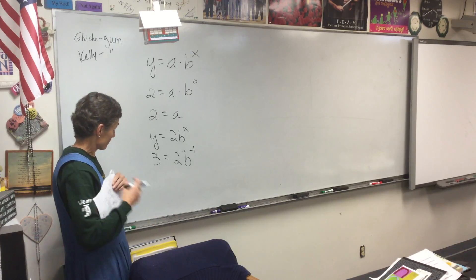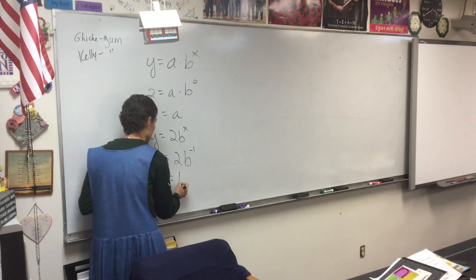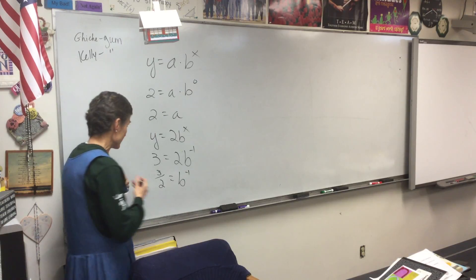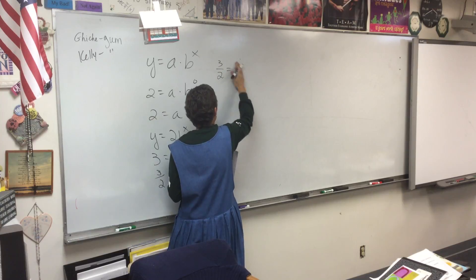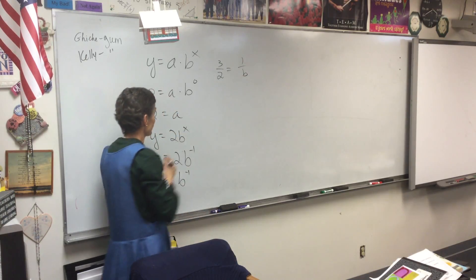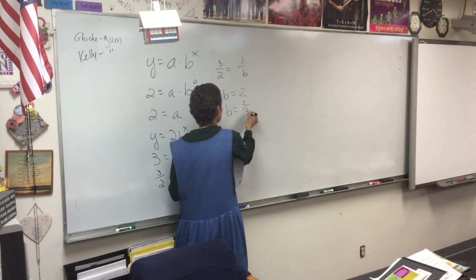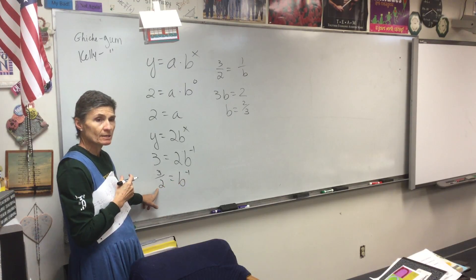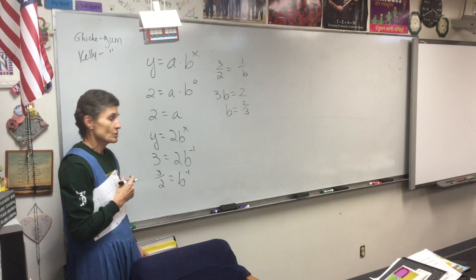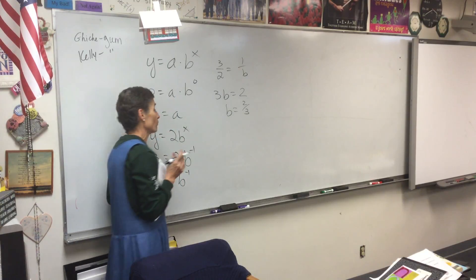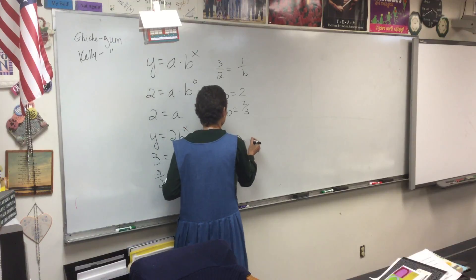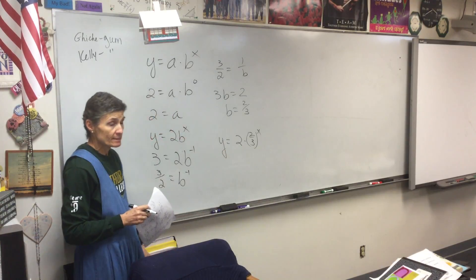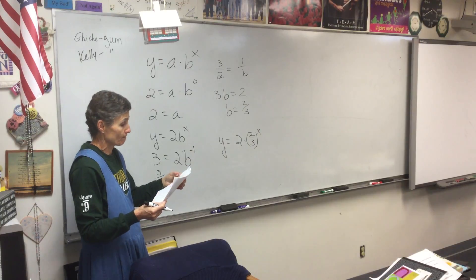Divide by 2. It's one over B. Then you cross multiply. So then we cross multiply, and it turns out B is two-thirds. Does it make sense that if B to the negative first is three-halves, regular B would be two-thirds? Don't forget to write your answer. Y equals 2 times two-thirds to the X. Do not ever combine these two. They are separate numbers.